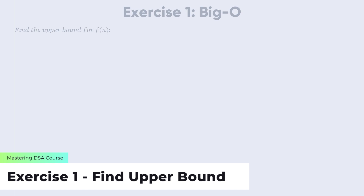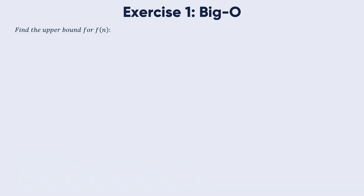Hello my friends and welcome to exercise number one. We are going to deal with Big O notation. We need to find the upper bound for a function f of n. The first function we have is f of n equal to 3n plus 8.